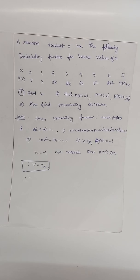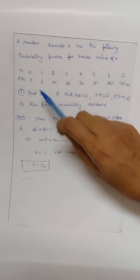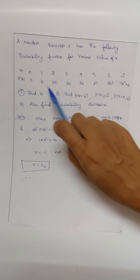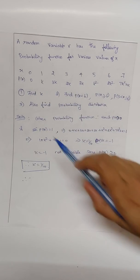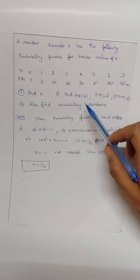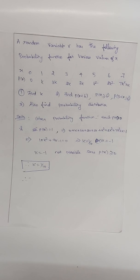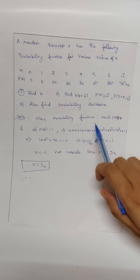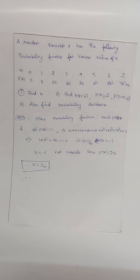Now let's see this example — a VTU question. A random variable X has the following probability function for various values of X. The values of X and the corresponding probabilities are given; we need to find k and complete the probability distribution. The two conditions are: each probability ≥ 0, and their summation equals one.